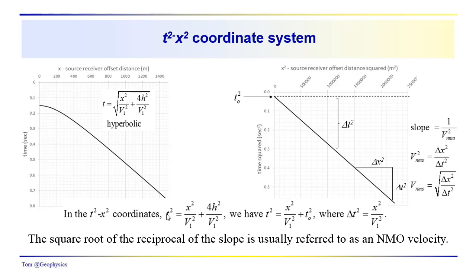So in the t-squared x-squared coordinates, we have t-squared is equal to x-squared over v₁-squared — we're just dealing with a single reflector here — plus four h-squared over v₁-squared. We know that this is basically the square of two h over v₁, and two h over v₁ is just t₀. So we have that t-squared is equal to x-squared over v₁-squared plus t₀-squared.